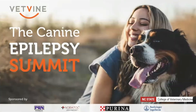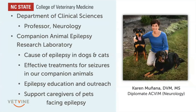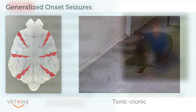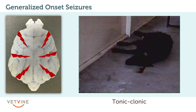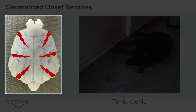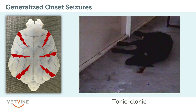We see generalized onset seizures in dogs and focal onset seizures in dogs. Generalized onset seizures are characterized by abnormal electrical activity on both sides of the brain, so they generalize to the entire brain at the onset of the seizure. The most common type of generalized onset seizure we see in dogs are tonic-clonic seizures.